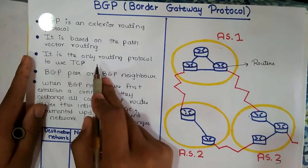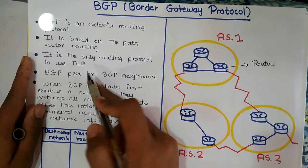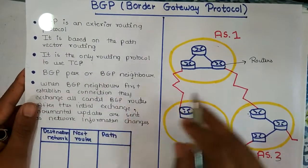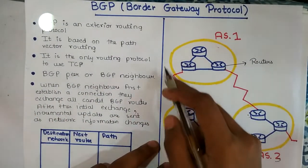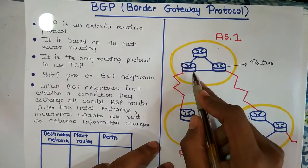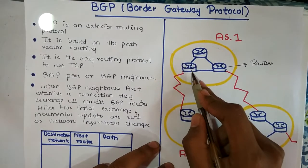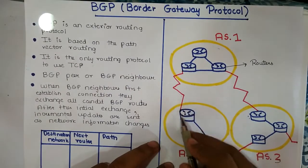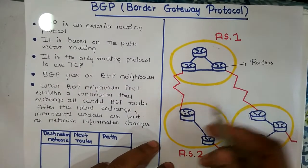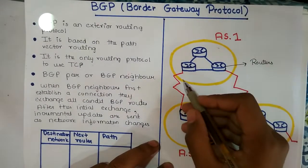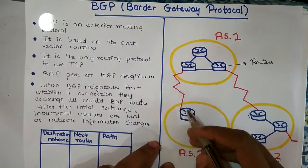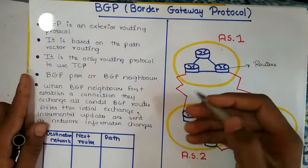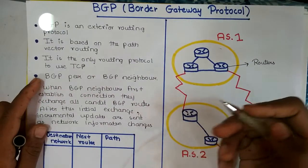BGP is the only routing protocol that uses TCP. Now let's look at what is a BGP Peer or Neighbor. In an autonomous system, there should be at least one router that supports BGP. When this router establishes a TCP connection with another router in a different autonomous system which also supports BGP, then it is considered a BGP neighbor. After creating a connection, they can exchange routing information and update their tables.